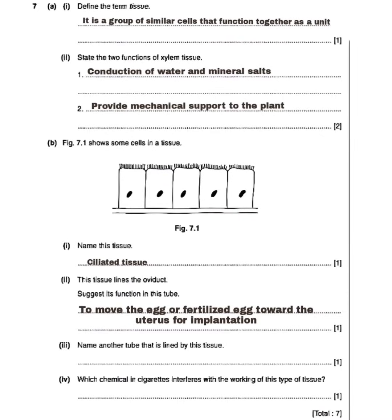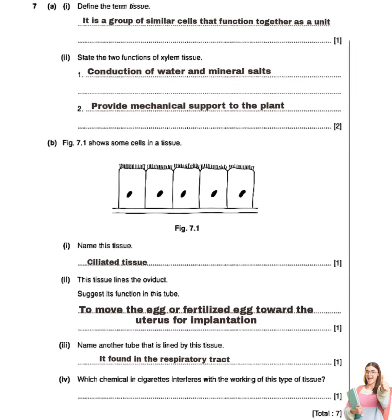Roman numeral number three is saying: name another tube that is lined by this tissue. Ciliated tissues are also found in the nasal cavity, so I'm going to say it is found in the respiratory tract. Its function in the respiratory tract is to trap and sweep out dust particles containing mucus.